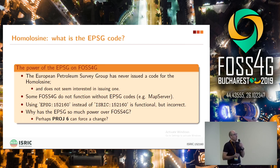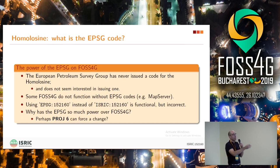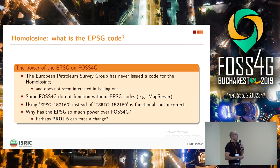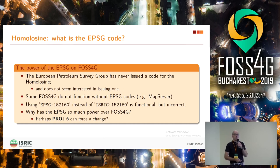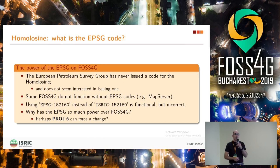Finally, there's no EPSG code for the Homolosine, and it looks like there won't be one any time soon. Some programs really want you to use EPSG codes, so you can use tricks — and in the end it kind of works. I can get it working on MapServer and serve tiles in the Homolosine. But one thing that bugs me is why we depend so much on the EPSG, and I think we should reflect on this. PROJ 6 is coming — maybe it can force a change.